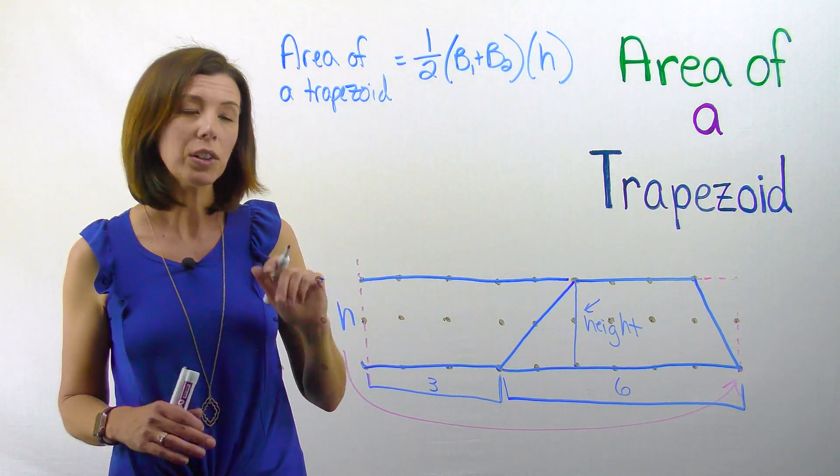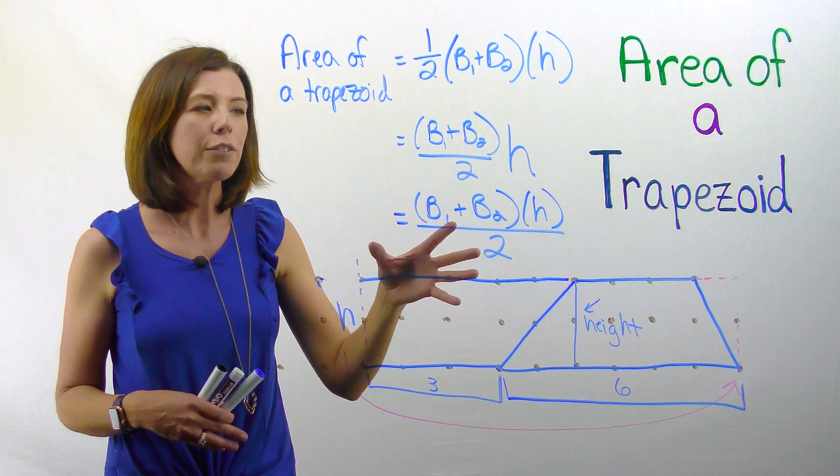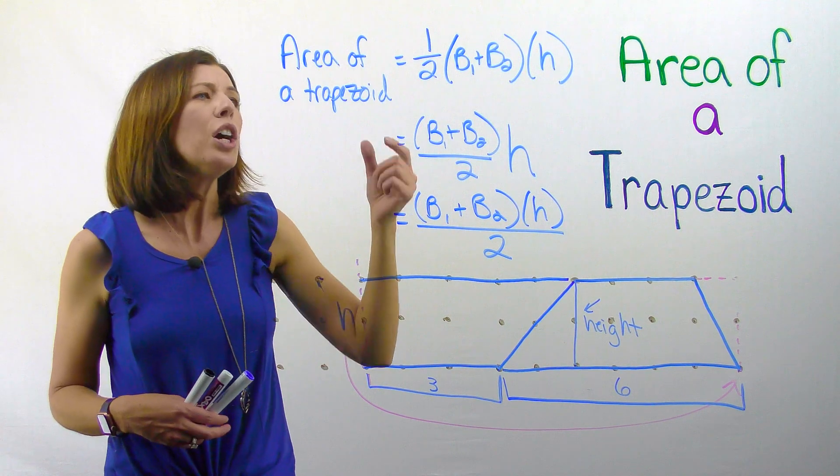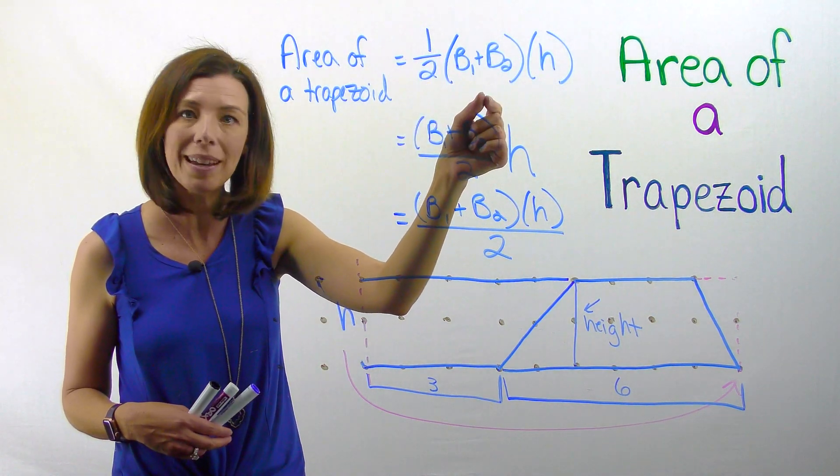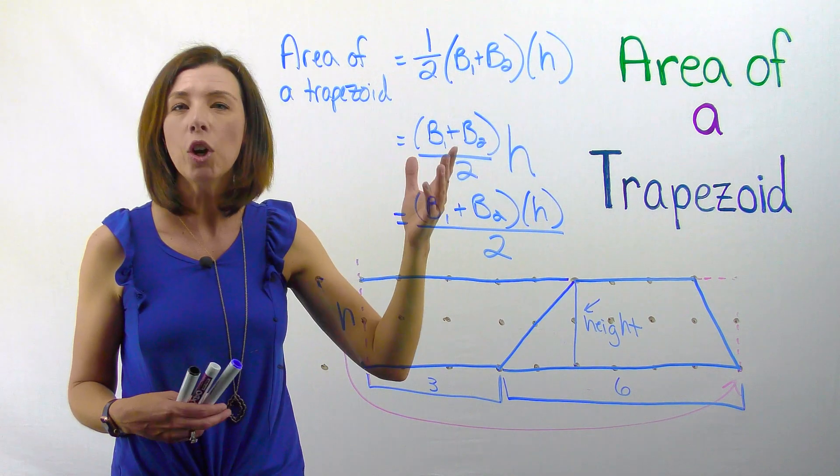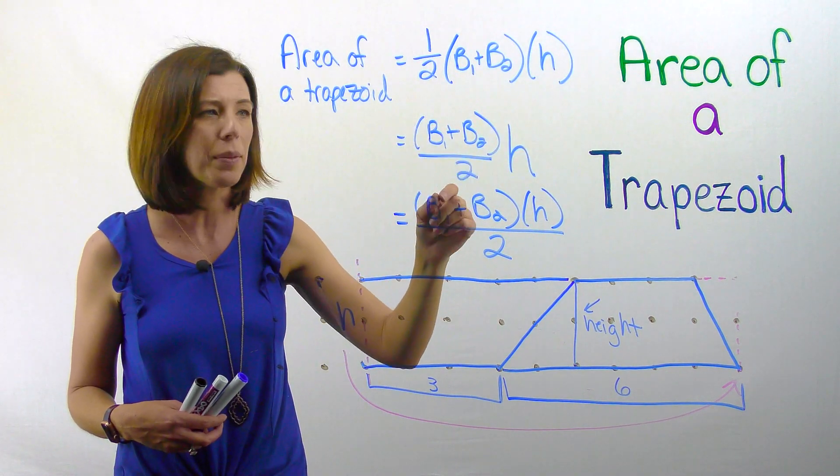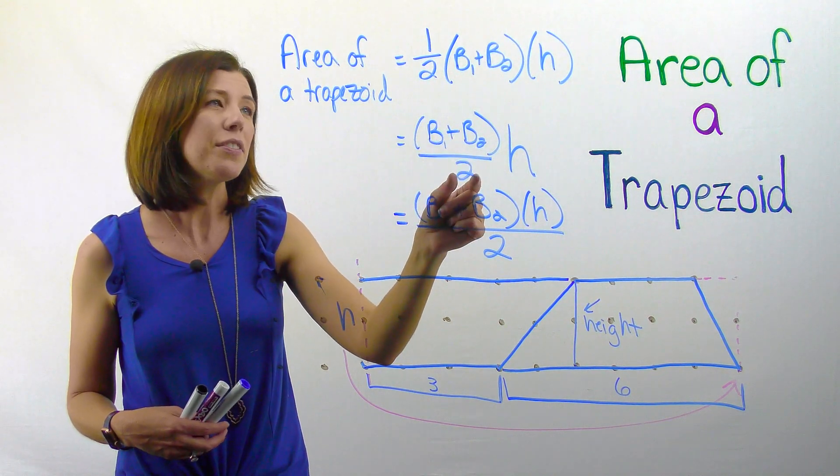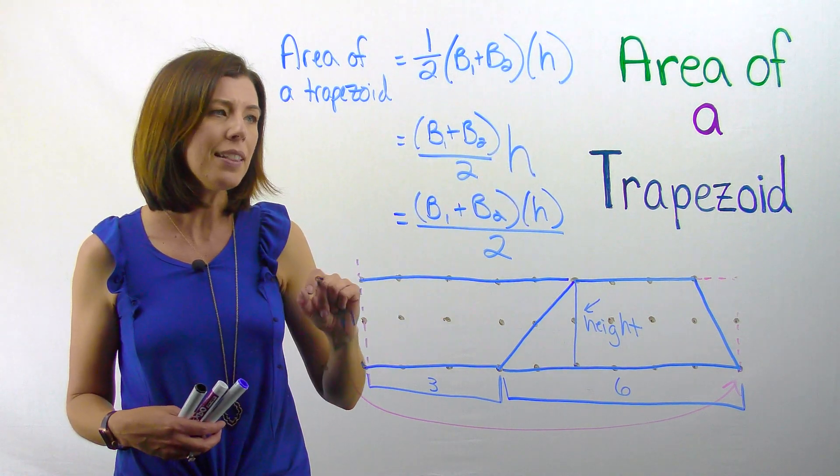Some other ways you might see it might look like this. You will see that these three different ways are all mathematically equivalent to write the same formula. So because I'm multiplying one half times the quantity of the bases times the height, I know because of the associative property of multiplication that I can switch these around, right?